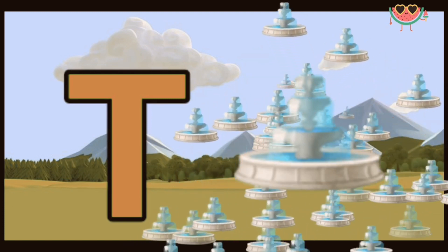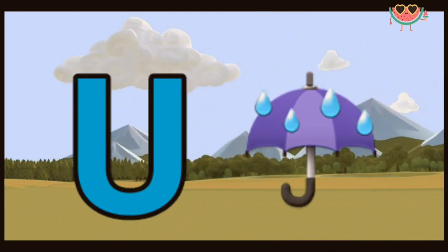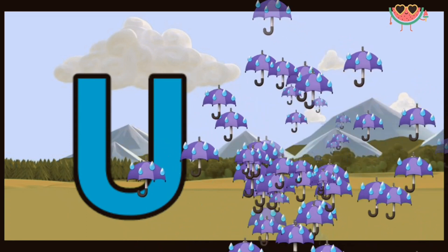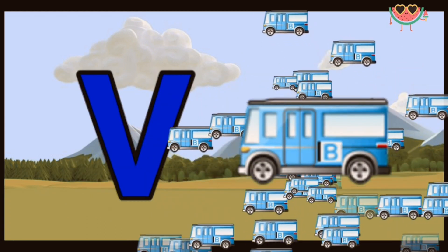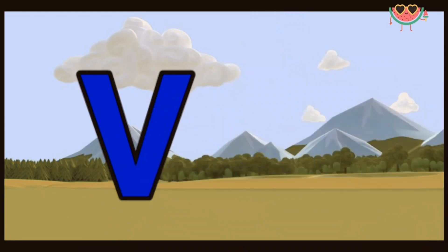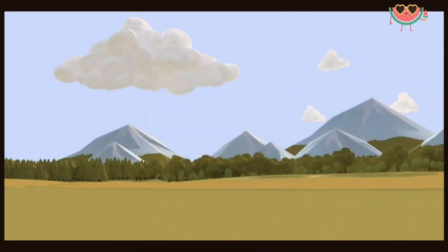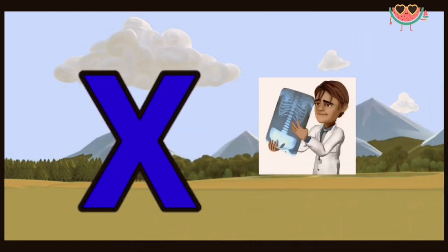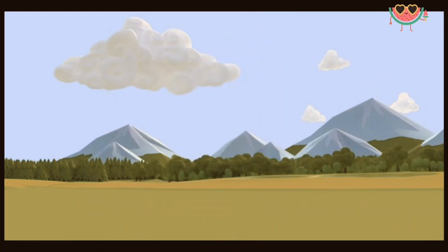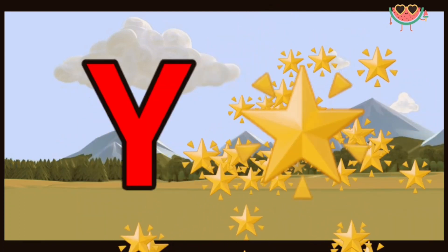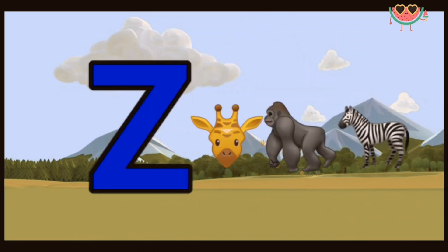...tap. U for umbrella. B for one. W for wallet. X for x-ray. Y for yellow. Z for two.